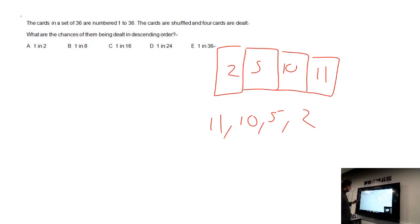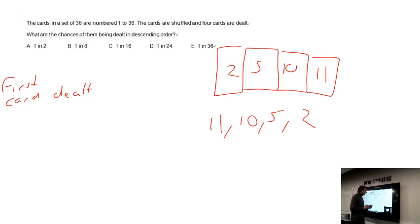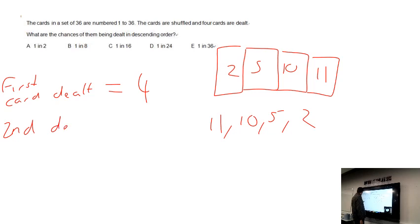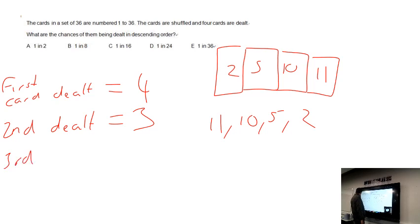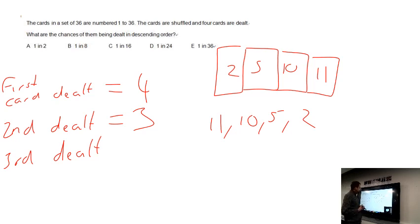To find the number of ways of ordering these four cards: for the first card there are 4 choices; for the second card, having removed one, there are 3 possibilities; for the third card there are 2 possibilities; and for the fourth card just 1 remaining card.